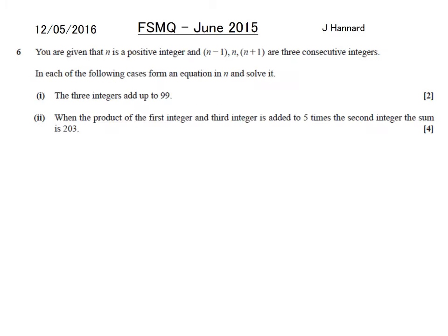Question 6, then. You are given that n is a positive integer, and n minus 1, n, and n plus 1 are three consecutive integers. In each of the following cases, form an equation in n and solve it. So the three integers add up to 99. Well, that's just the addition of them all. Set it equal to 99. Tidy up. You get 3n equals 99. Divide both sides by 3. n must be 33. And if you think about it, 32, 33, and 34 do add up to 99. And they're consecutive as well.